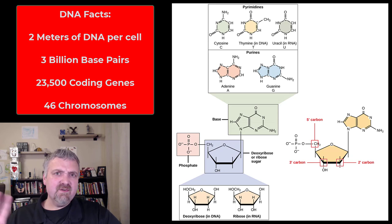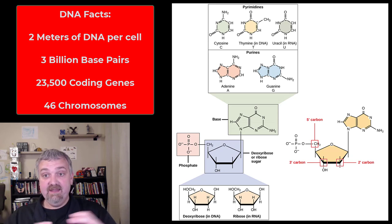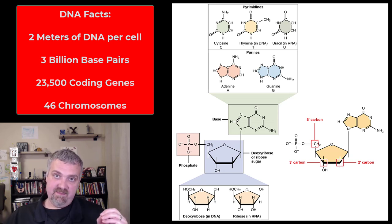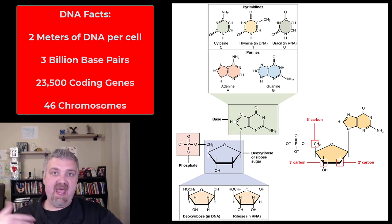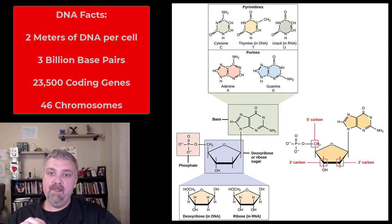About 1% of your cell is DNA — somewhere in the neighborhood of 6 picograms of DNA. That's what's amazing about DNA: there's 2 meters of it, but you only have 6 picograms worth of it. If you stretched all your DNA out, it would go to the sun and back several hundred times. That's how much DNA is crammed into you, but in a very tiny package.